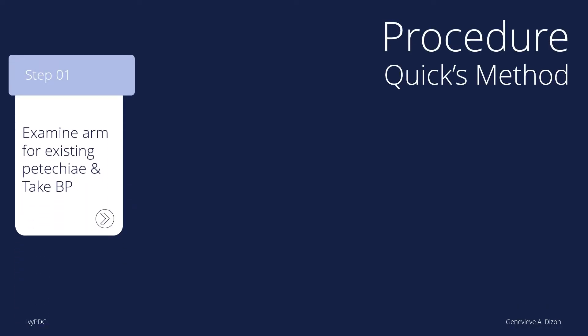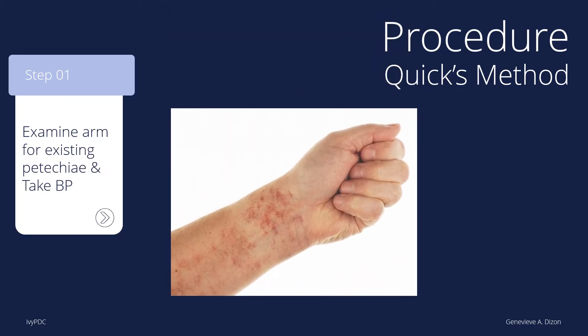These are the following steps for the Quick's method. First, examine the forearm for any existing petechiae. Petechiae are minute hemorrhages under the skin that appear as small red dots or spots. These are the results we will be looking for after the procedure, so it should be noted if they are already present before the procedure so they will not be counted.